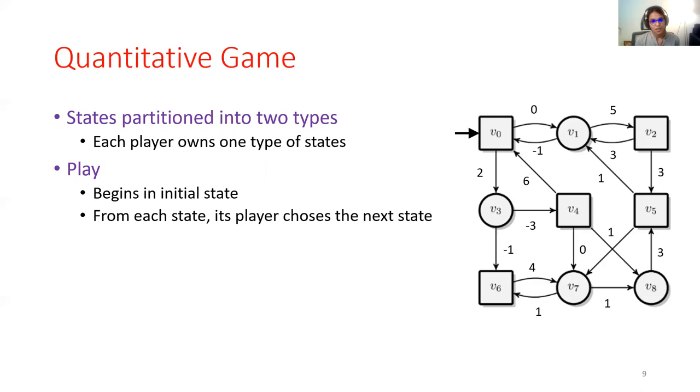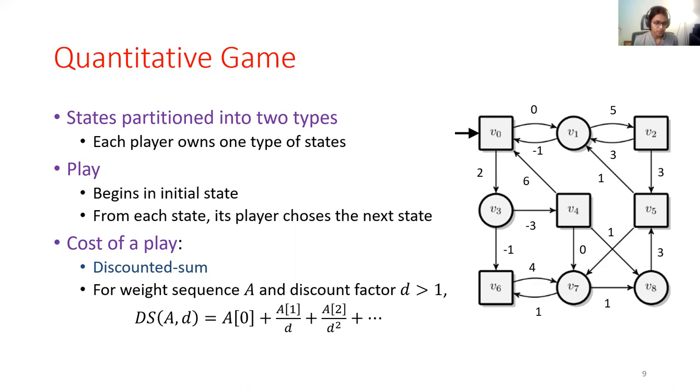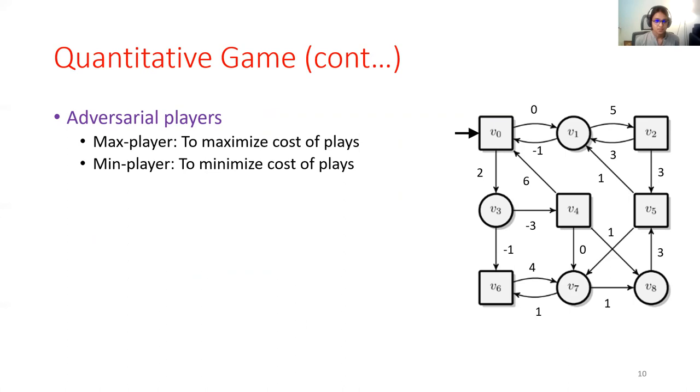You can think of a play as being generated by the two players moving a token along the edges. At the start of the game, this token is placed at the initial state. And from there on, whichever player owns the current location of the token gets to decide which state to push the token to next. And of course, the next state has to be a neighboring state. Every path in this weighted graph is associated with a weighted sequence, and that is used to compute the cost of a play, which is the discounted sum of the play's weighted sequence.